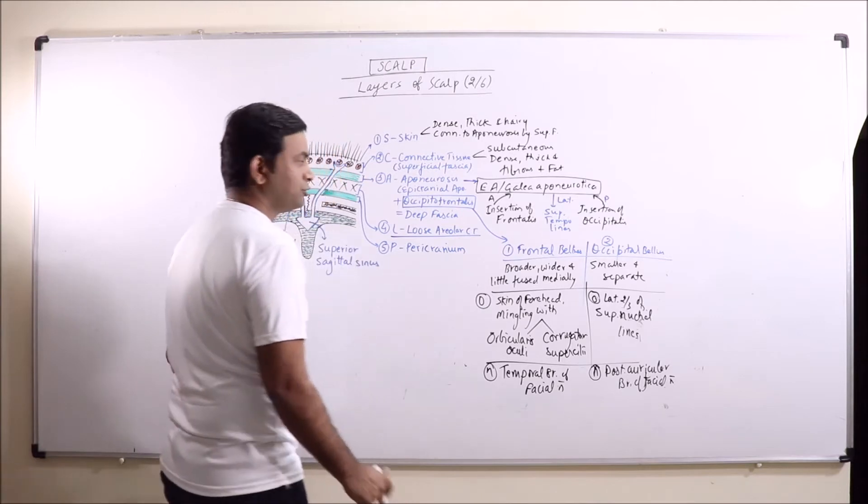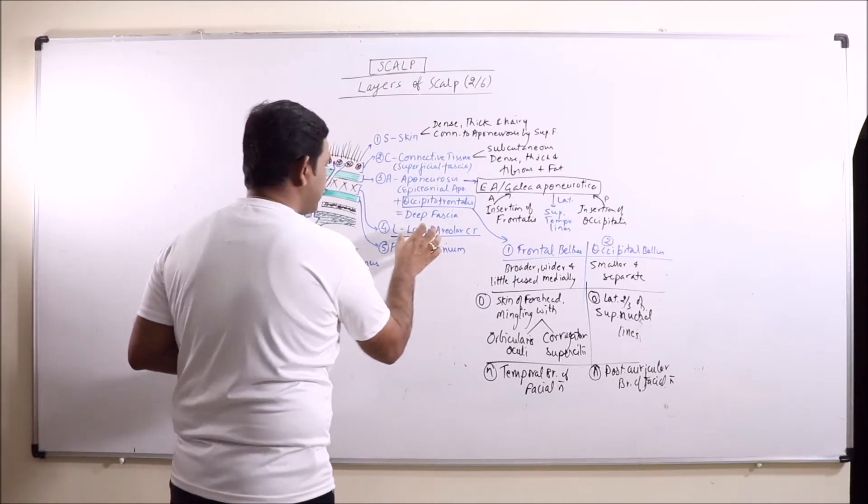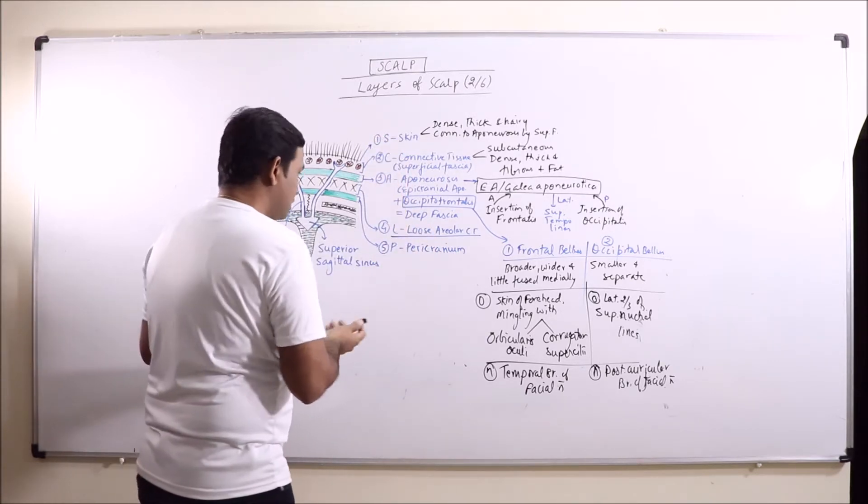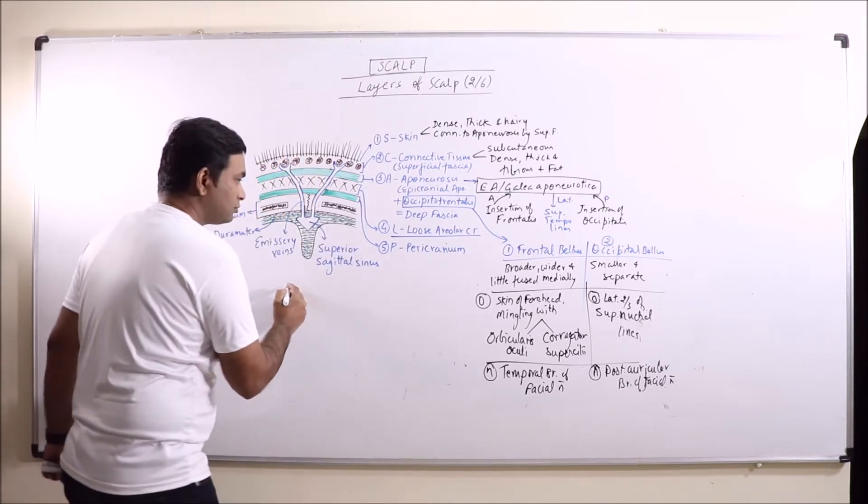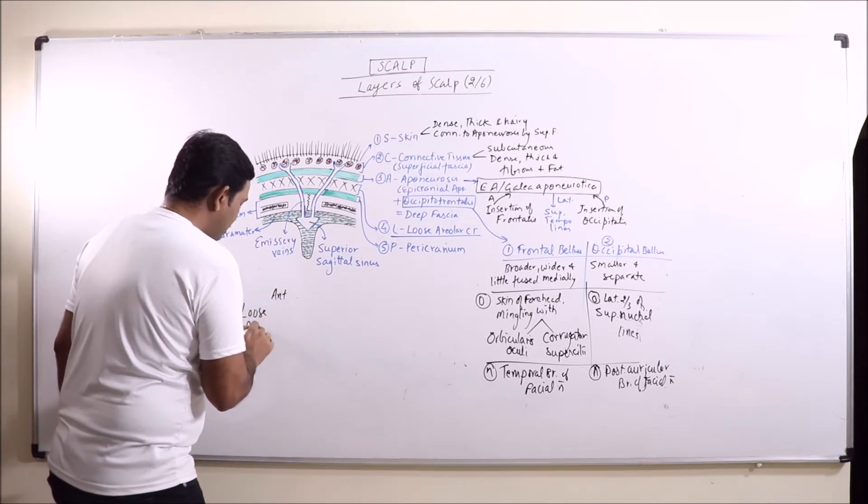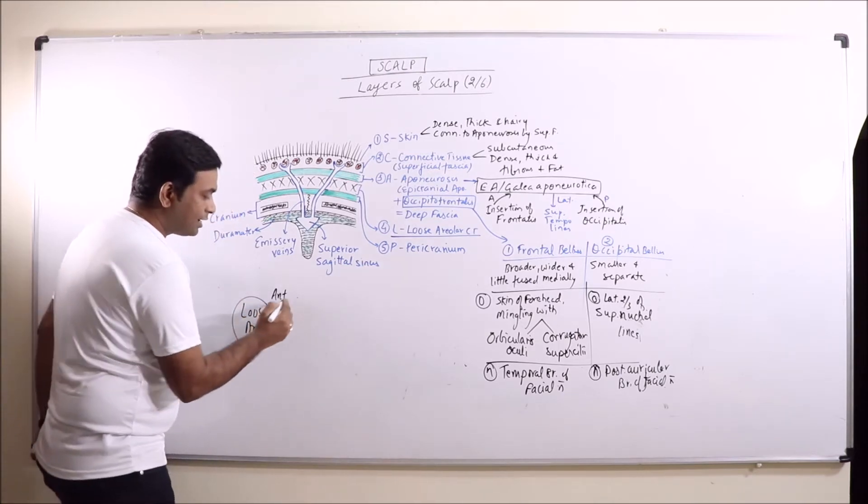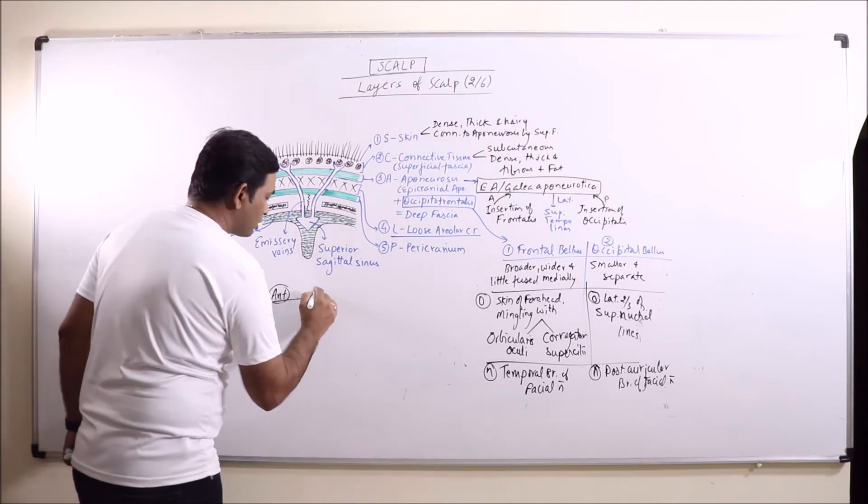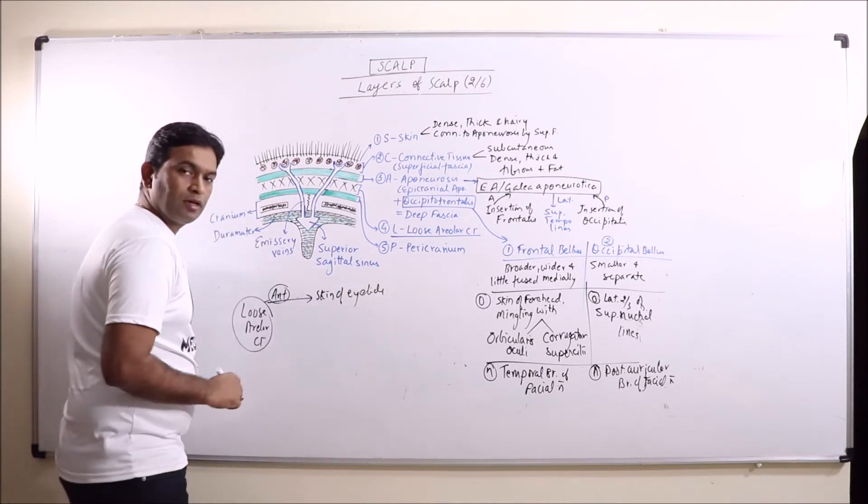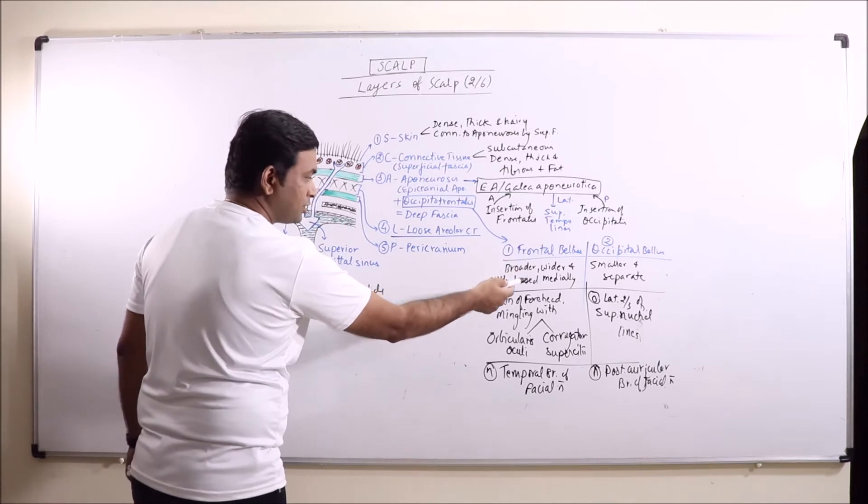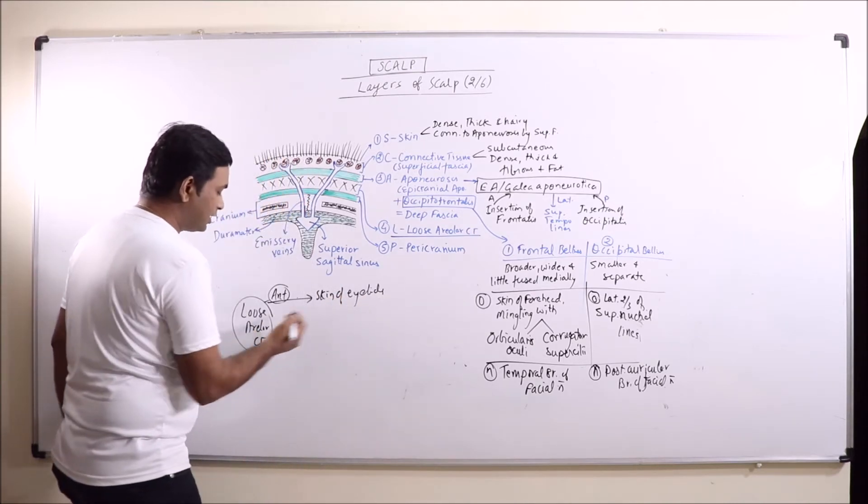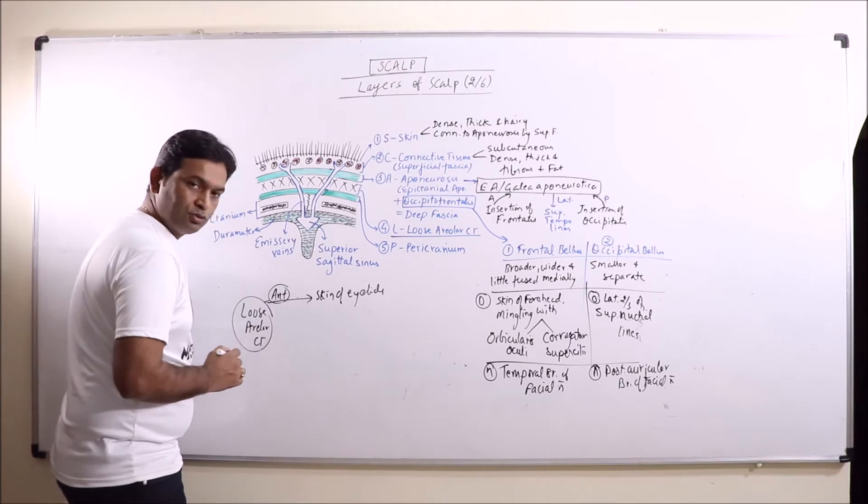Now the loose areolar connective tissue. Loose areolar connective tissue is basically an easy plane of separation between the above three layers and the pericranium. Loose areolar connective tissue is connected anteriorly with the inner skin of eyelids. Now it is very important because frontalis muscle is not having any bony adherence. So in skin of eyelids, the connection of loose areolar connective tissue gives the support.